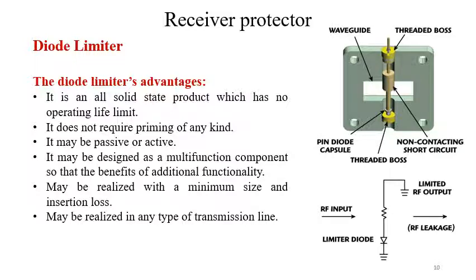Now consider the diode limiter. Advantages include: it is an all solid-state product with no operating lifetime limit, it does not require priming of any kind, it may be passive or active, and it may be designed as a multifunction component so that additional functionality is realized with minimum size and insertion loss. It may be realized in any type of transmission line. In this configuration, the RF input passes through the limiter diode, producing the RF leakage output.